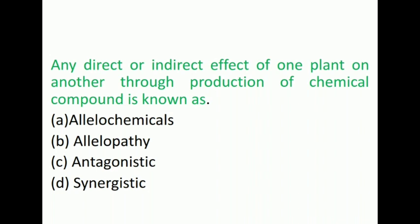Next question is: Any direct or indirect effect of one plant on another through production of chemical compounds is known as? Options are allelochemicals, allelopathy, antagonistic, and synergistic. The right answer is allelopathy. Allelochemicals means a chemical produced by a living organism that exerts a detrimental physiological effect on individuals of another species when released into environment. Antagonistic effect is the adverse effect of one organism on another organism. Synergistic effect is the interaction of two or more substances where combined effect is greater than the sum of their separate effects.